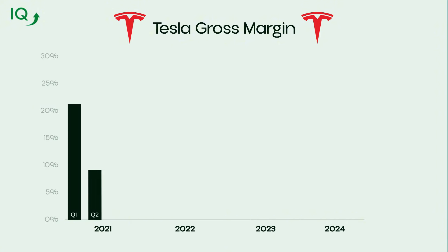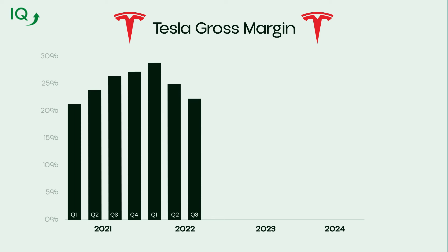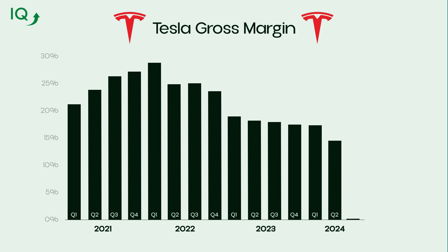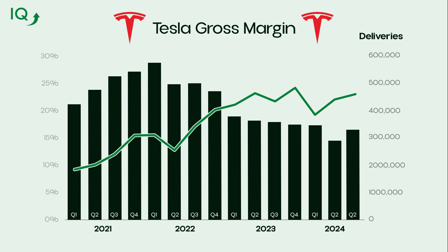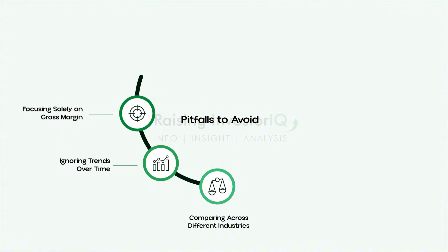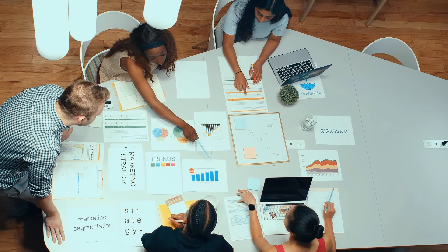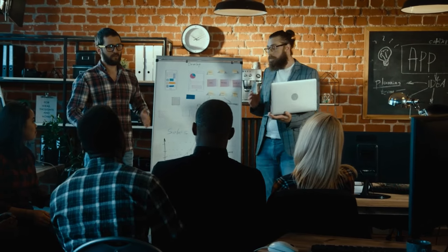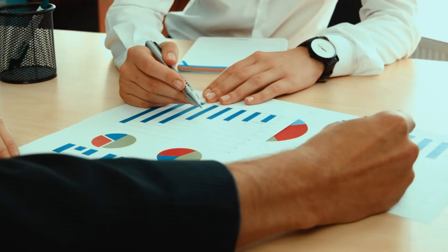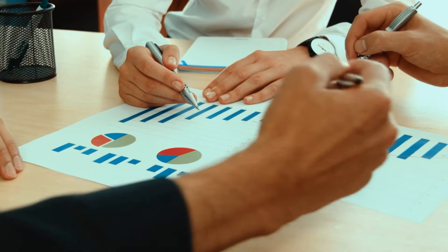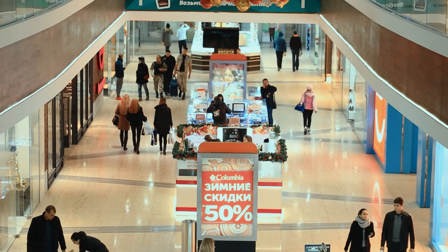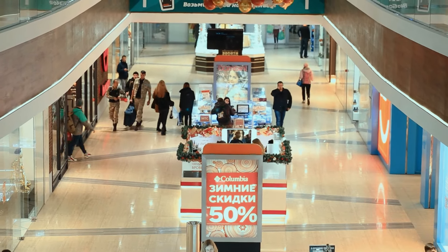Also, don't rely on a single standalone value for gross margin — analyze trends over the past three to five years to identify whether the margin is improving, stable, or declining. Consistent improvements may indicate effective cost management or strong pricing power, while declining margins could signal rising costs or increased competition. Additionally, avoid comparing gross margins across entirely different industries, as each industry has its own cost structures and margin expectations — software companies typically have higher gross margins than manufacturing firms.